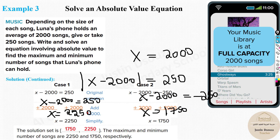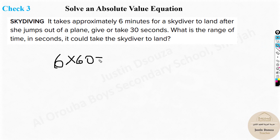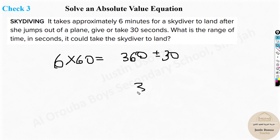Next problem — there's a catch: it takes approximately 6 minutes for a skydiver to land after jumping out of a plane, give or take 30 seconds. The question asks for the range of time in seconds. First, convert 6 minutes to seconds: 6 times 60 equals 360 seconds. The equation is: absolute value of X minus 360 equals 30. Give or take 30 seconds, the answers are 360 plus 30 equals 390 and 360 minus 30 equals 330.